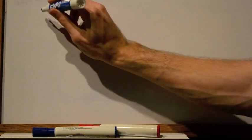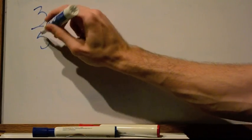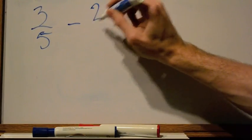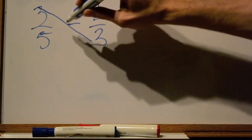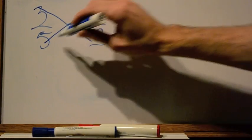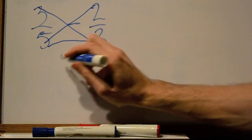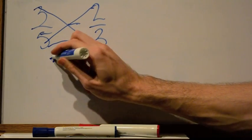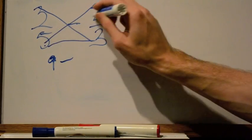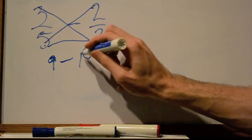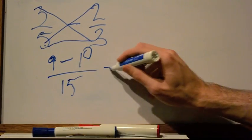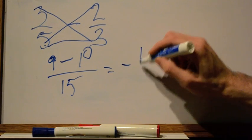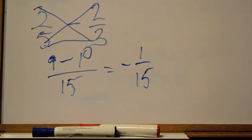What if we want to do subtraction? 3/5 minus 2/3. Same thing, except you do this times this minus this times this over this times this. So it comes out to be 3 times 3 is 9 minus 5 times 2 is 10 over 5 times 3 is 15. So what we get is negative 1 over 15. See how quick that was?